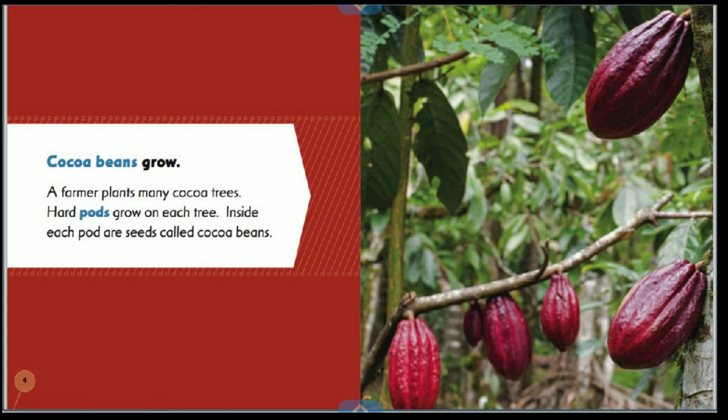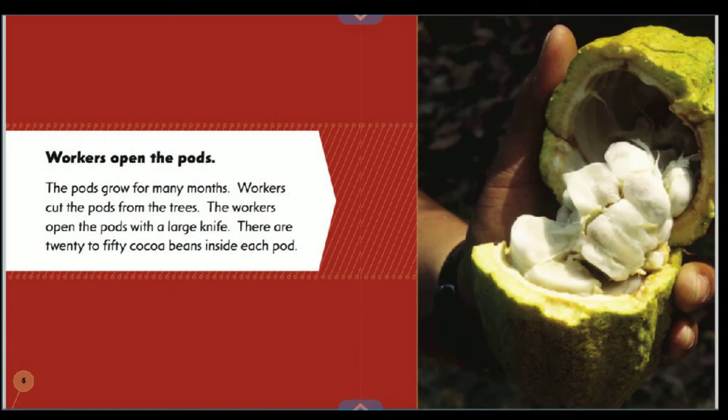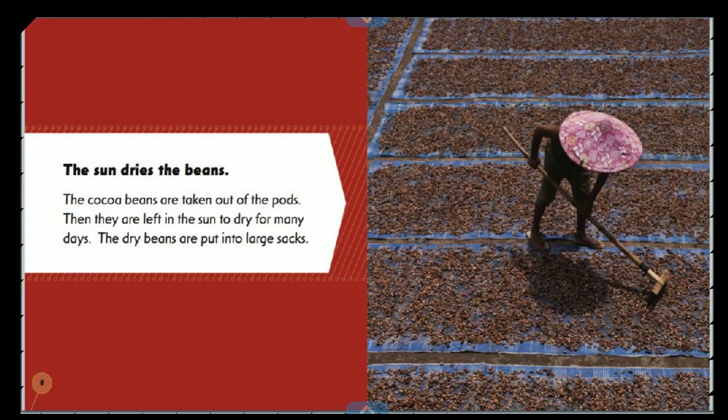Workers open the pods. The pods grow for many months, and workers cut the pods from the trees. The workers open the pods with a large knife. There are 20 to 50 cocoa beans inside each pod.